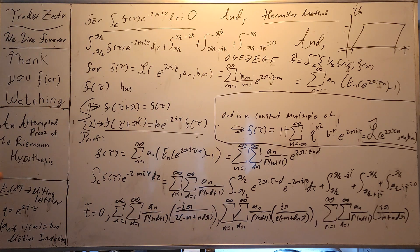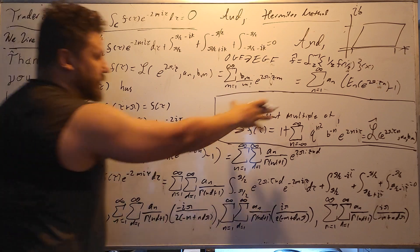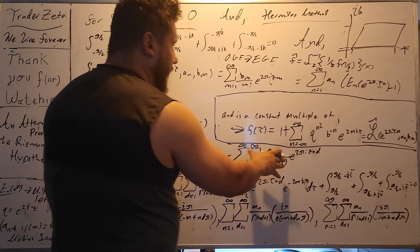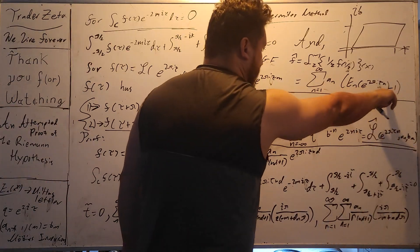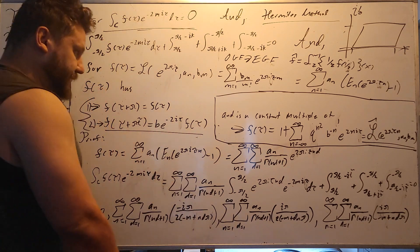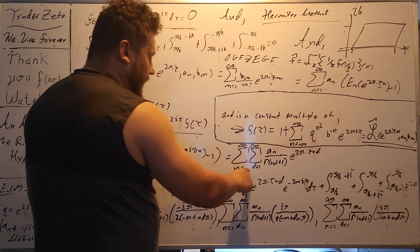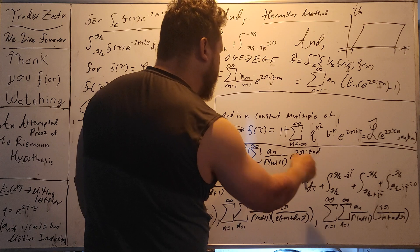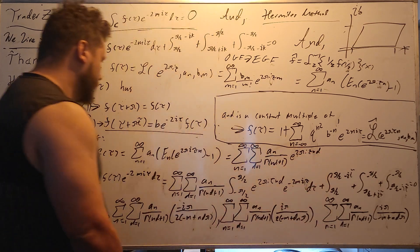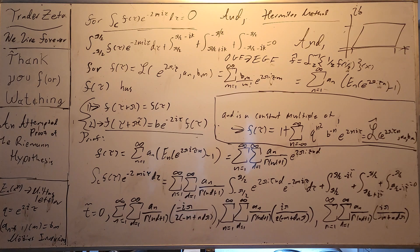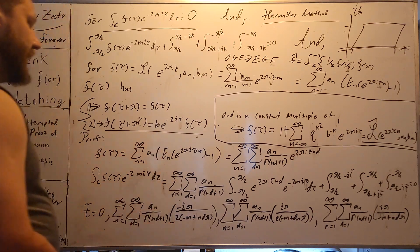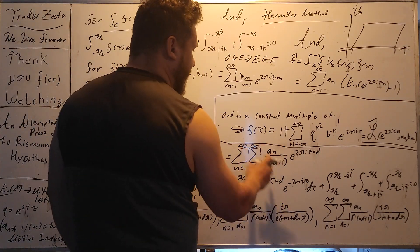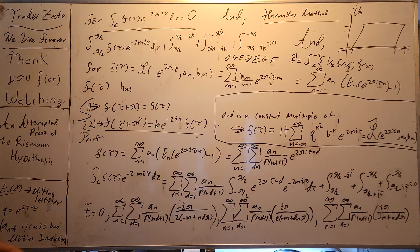So proof of this. Let's set f of tau equal to a representation with the Mittag-Leffler function in there. And what we can do is we can blow apart the Mittag-Leffler function into its sum series representation. Sum n equals 1 to infinity, sum d equals 1 to infinity, a sub n divided by gamma n d plus 1 e to the 2 pi i tau n d. Beautiful. And this is really easy to deal with. Like, this is really easy to integrate. In fact, the contour here is just going to come in here.